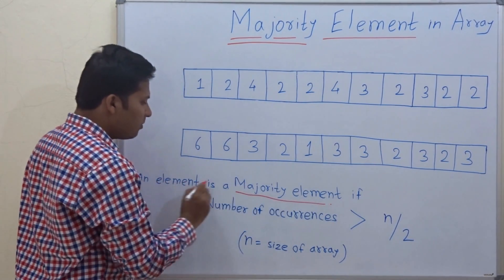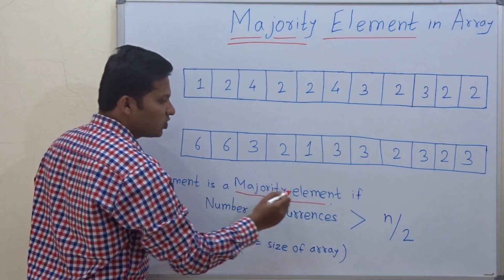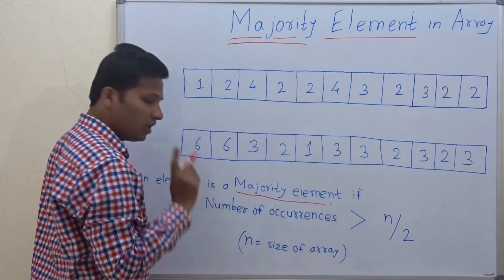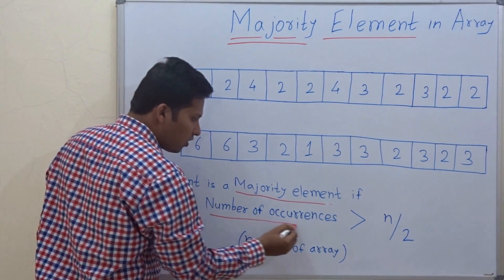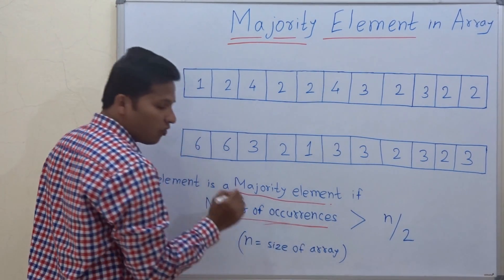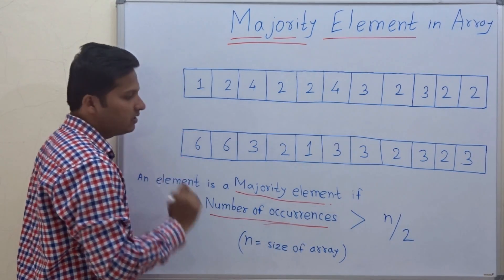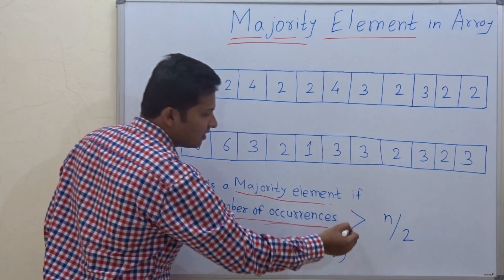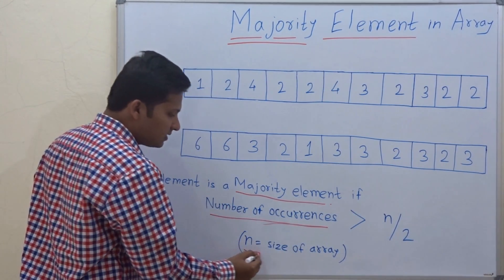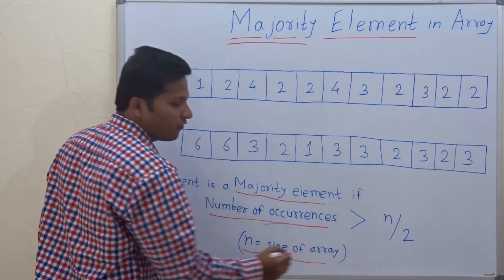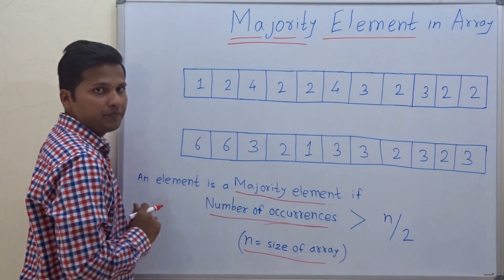An element is a majority element if the number of occurrences of that element is greater than n/2, where n is the size of the array.